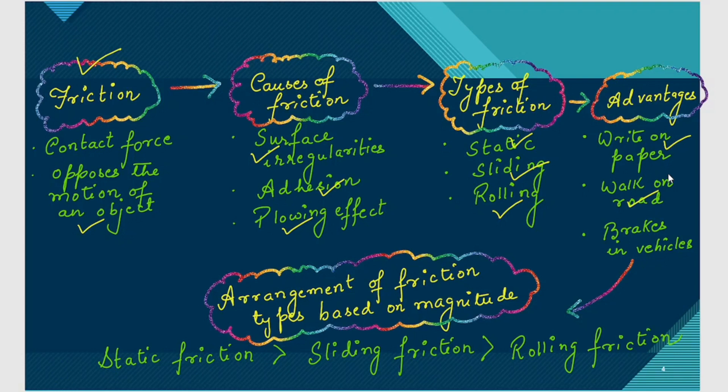Now, as there are three types of friction, we can arrange them on the basis of their magnitude. Static friction is greater than sliding friction. Sliding friction is greater than rolling friction.